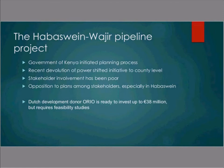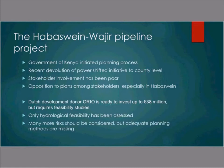One specific aspect of the project is that the Dutch development donor organization OREO is ready to invest up to 38 million euros — one third as a gift and two thirds as a soft loan. However, they have put a condition that the project requires several feasibility studies. So far, only the hydrological and technical feasibility studies have been done. What has not been done is to look at social impacts or the financial feasibility of the whole project, and many more risks should be considered. Adequate planning methods are also missing.